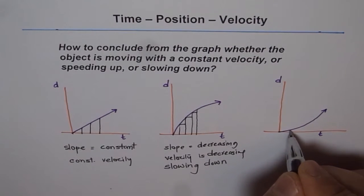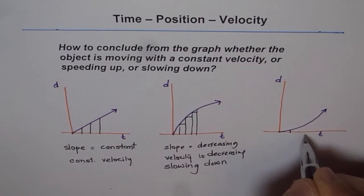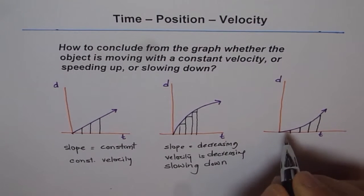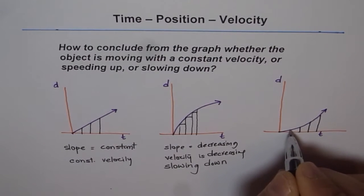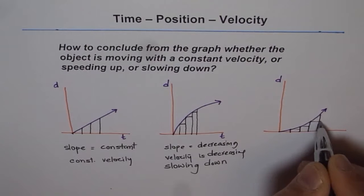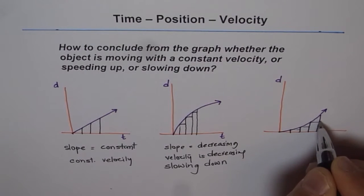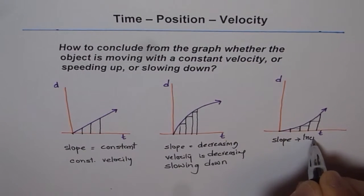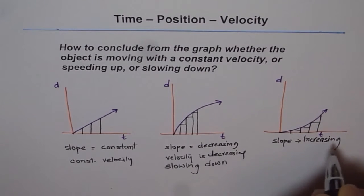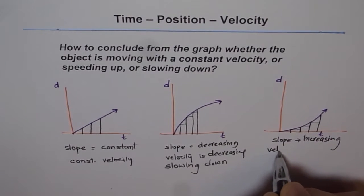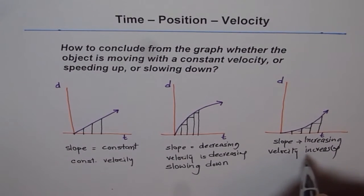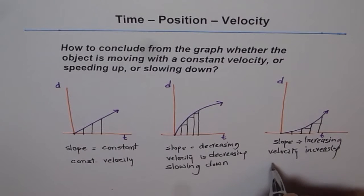If we make triangles on the third graph, taking equal time intervals, the first triangle is very small, then slightly bigger, slightly bigger, much bigger. So rise over here is much more. We say that the slope is increasing, and since slope is increasing, velocity is also increasing. Since velocity is increasing, the object is speeding up.